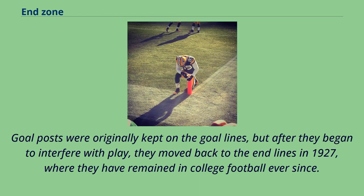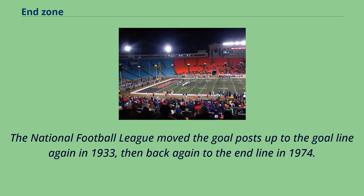Goal posts were originally kept on the goal lines, but after they began to interfere with play, they were moved back to the end lines in 1927, where they have remained in college football ever since. The National Football League moved the goal posts up to the goal line again in 1933, then back again to the end line in 1974.